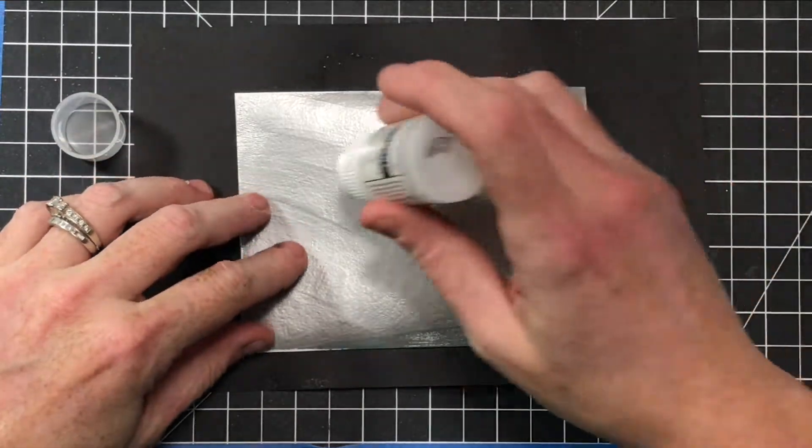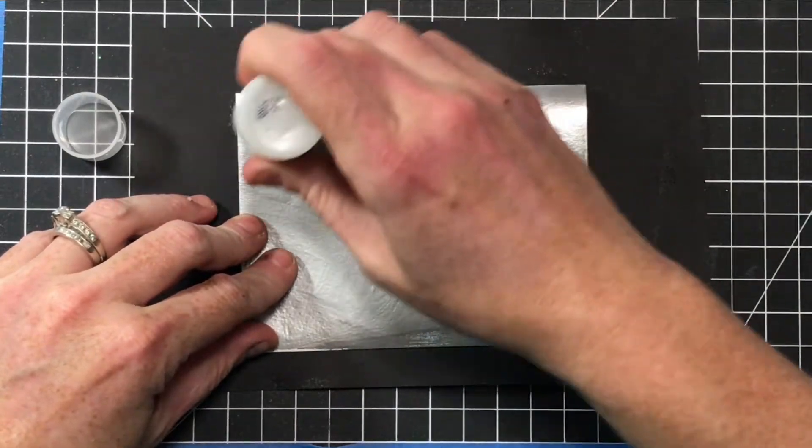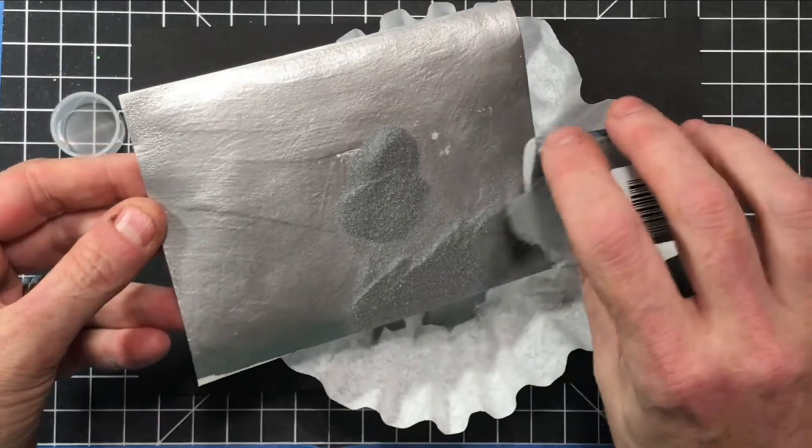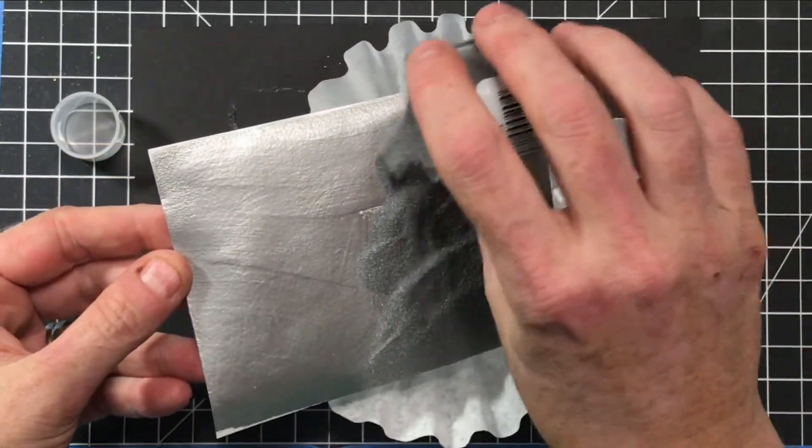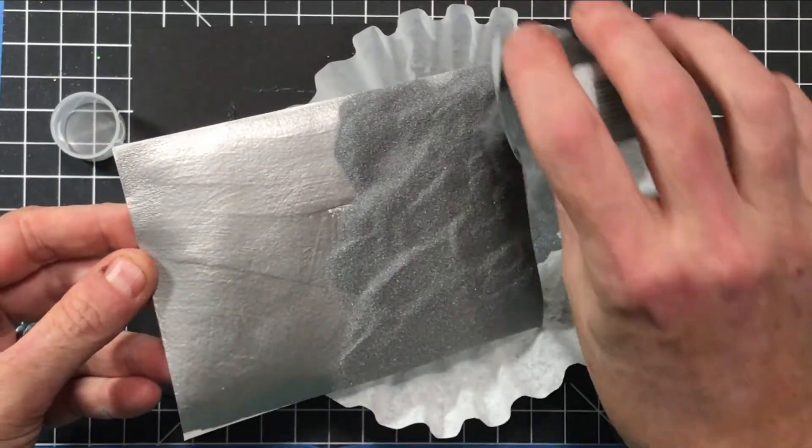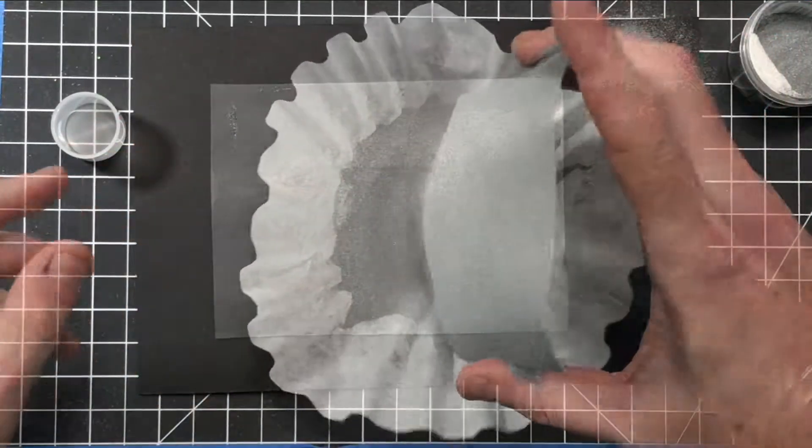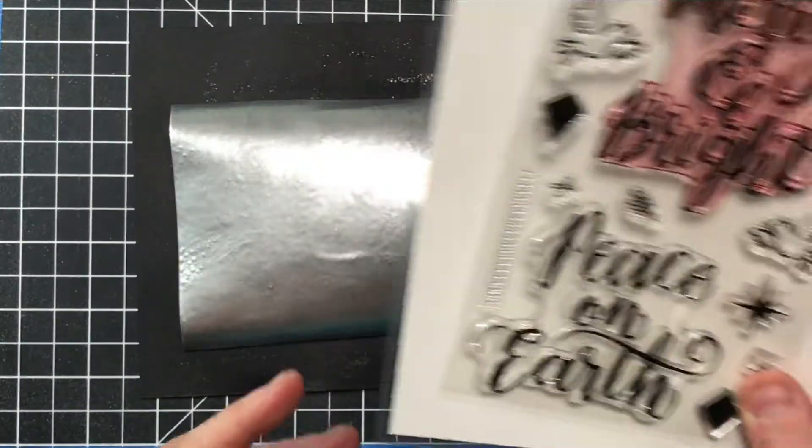I kind of speed that up so you can see the shine start to develop. And then go ahead, like I said, this would be step two - pour the powder and then we're gonna heat it up.